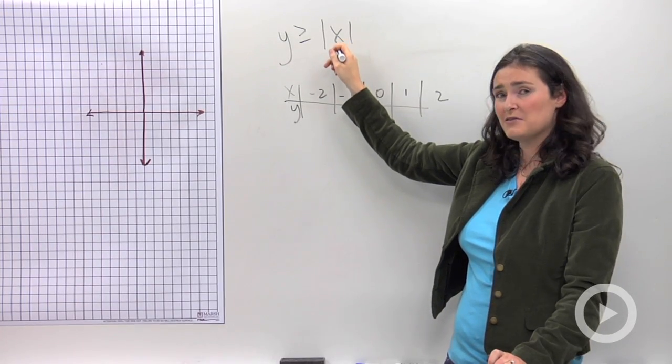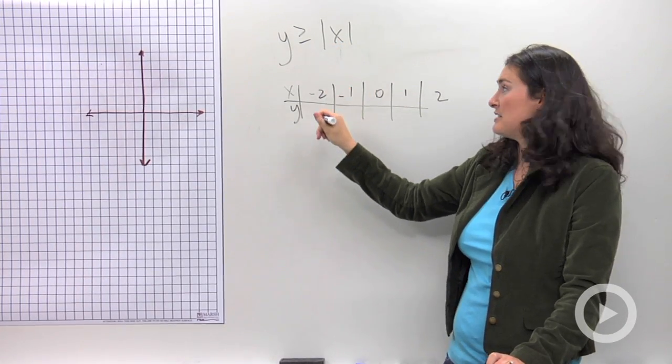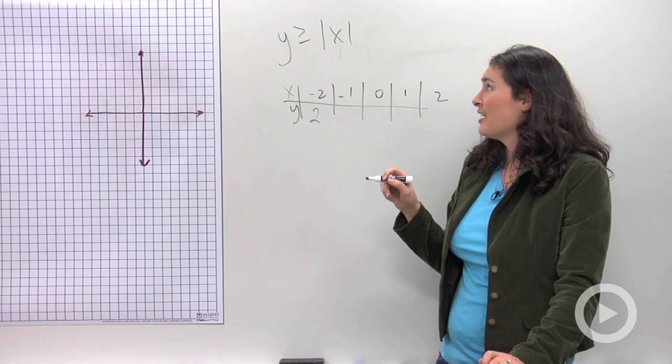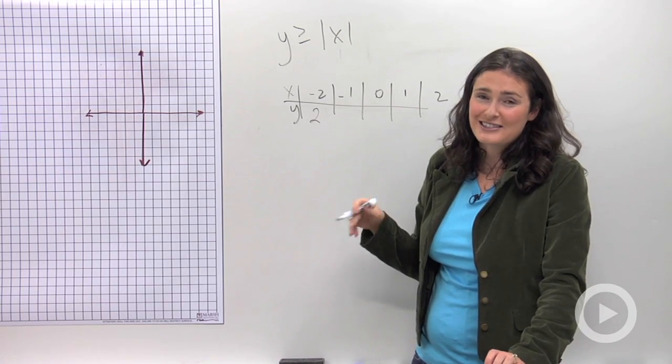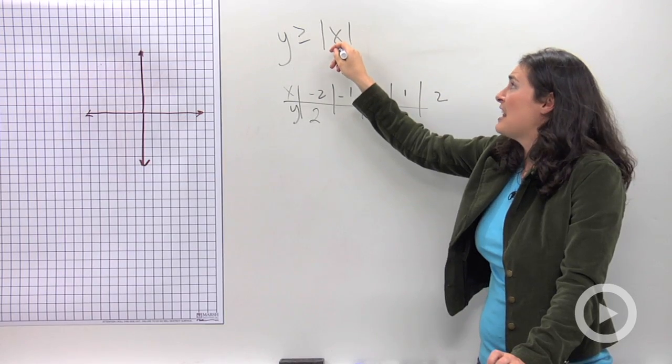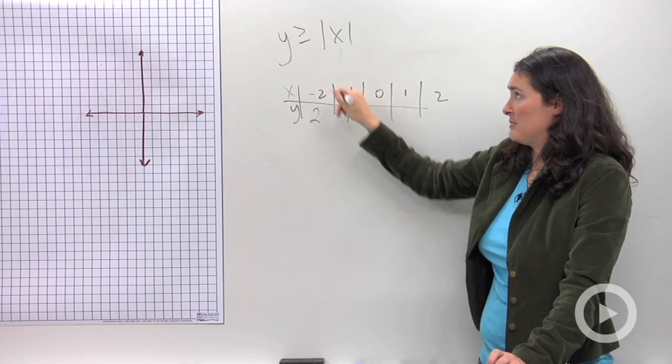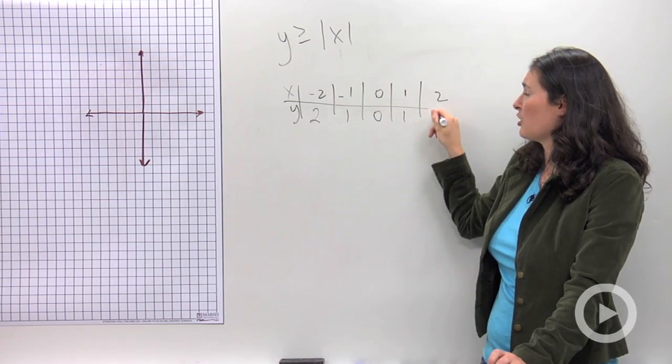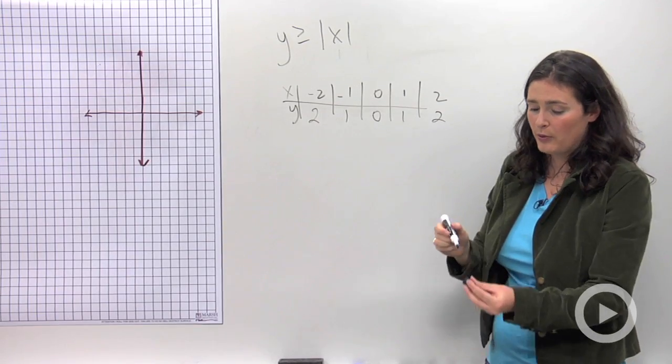Like if I put negative 2 in there, absolute value-wise, I get positive 2. By the way, absolute value-wise is not a real word—I kind of made that up just between you and me, but you can use it if you want to. Negative 1, absolute value-wise, becomes positive 1. Go through and fill it out like that, point by point.